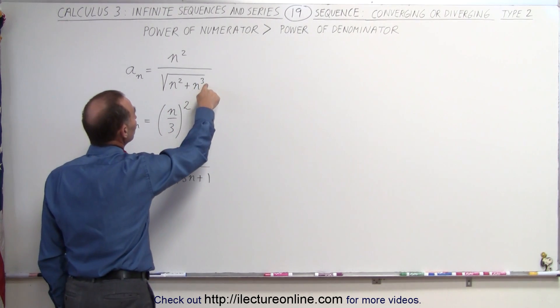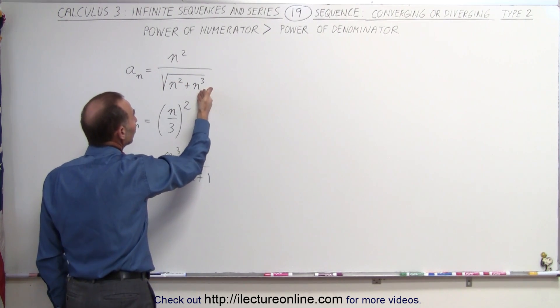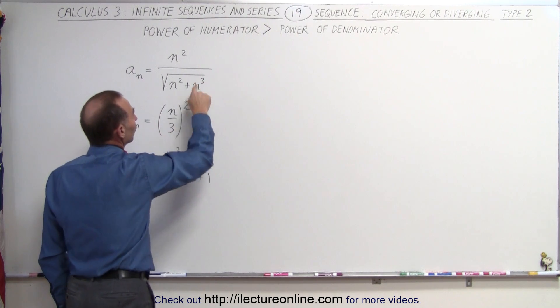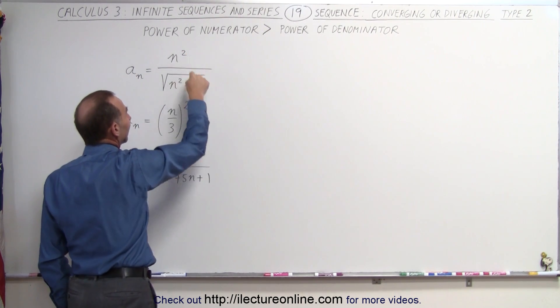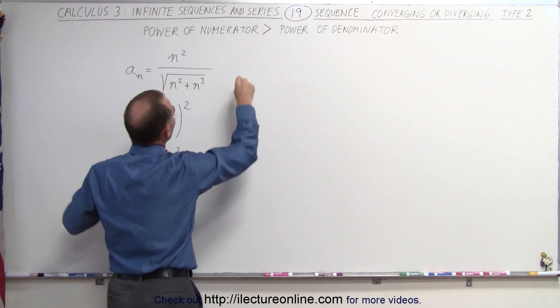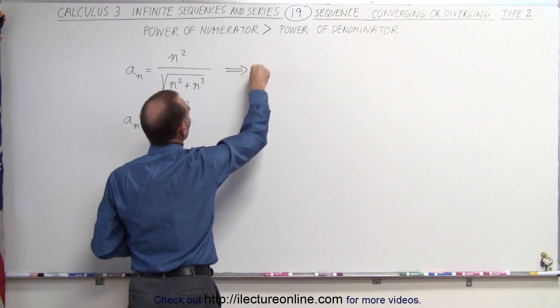In other words, n cubed in a radical is really n to the 3 over 2 power, so n squared is larger than n to the 3 over 2 power. Therefore, this sequence will diverge.